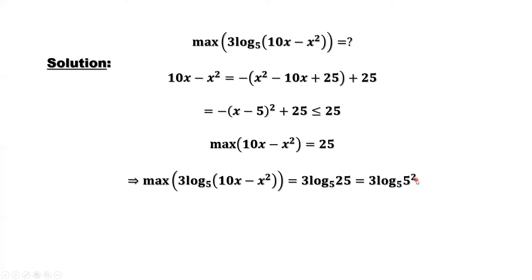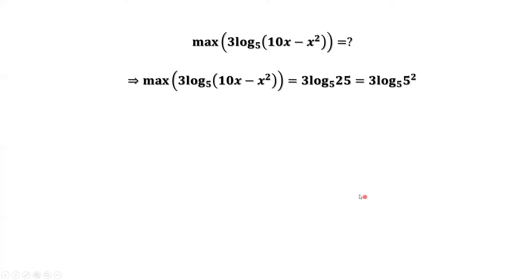25 is 5 squared. We know the basic formula. Inside the exponent, we have 2 here. We can always bring this 2 out to the front. This equals 2 times 3 times log base 5 of 5. What is log base 5 of 5? It's 1. That's the basic identity for log function.